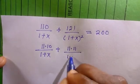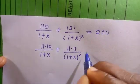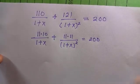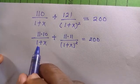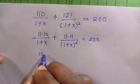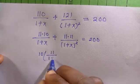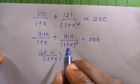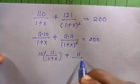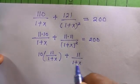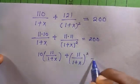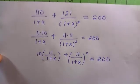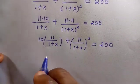We take out 10 from here, and we are going to have 11 divided by 1 plus X bracket, plus 11 divided by 1 plus X, all squared. So this is just like a level squared, and all of this is the level divided by 1 plus X, raised to the power of 2, equals 200.